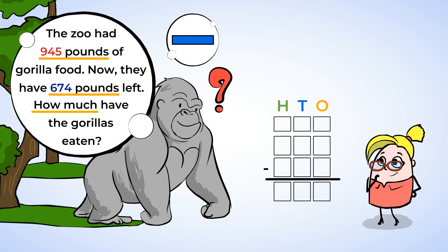Let's use our place value chart. The gorillas started with 945 pounds of food, and now 674 pounds are left. So we subtract 945 minus 674 to figure out how much was eaten.